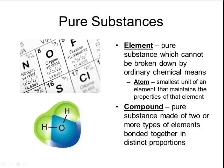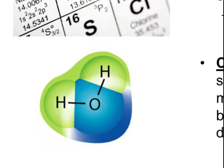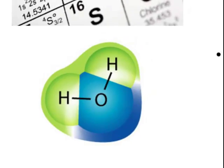Another pure substance is a compound. You can take the different elements on the periodic table and combine them together to make other types of substances called compounds. A compound is a pure substance made up of two or more types of elements that are bonded together. There are two different types of bonds — covalent bonds and ionic bonds. Those compounds have very distinct properties and a very distinct composition, with elements bonded together in distinct proportions. For example, in a water molecule, you always have two hydrogens for every one oxygen.